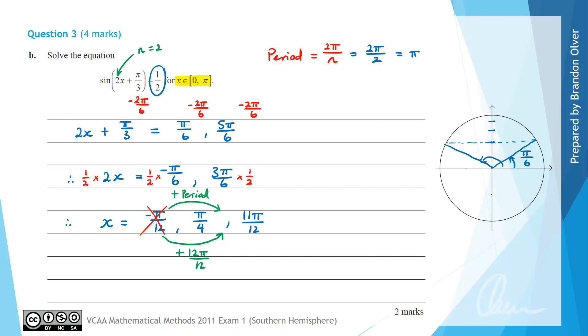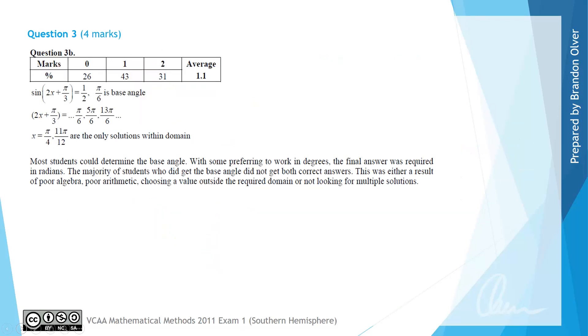This is still within our domain of 0 to pi. If we added the period onto pi over 4 we'd get 5 pi over 4 which is outside the domain. Therefore x equals pi on 4 and x equals 11 pi on 12 are the two solutions for this equation.